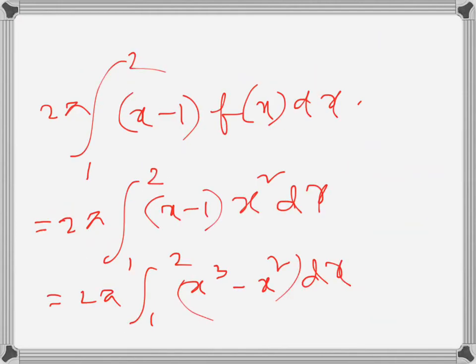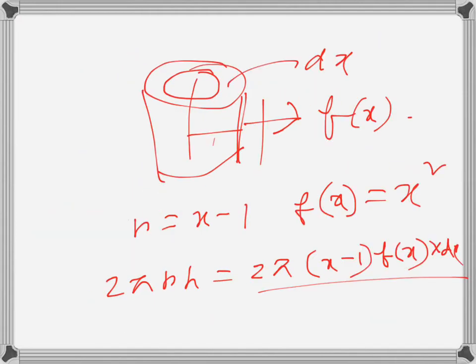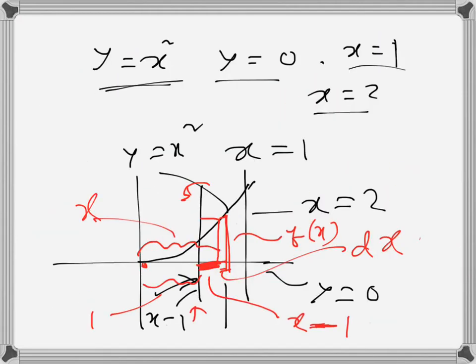The only difference here is that the area is rotated about another straight line, so we have to be careful about finding the radius — it will not simply be x. It will be something else, and we need to be careful about that when revolving around another straight line.